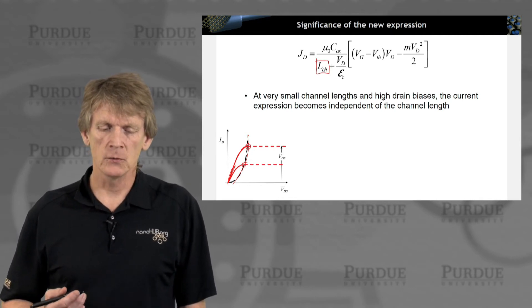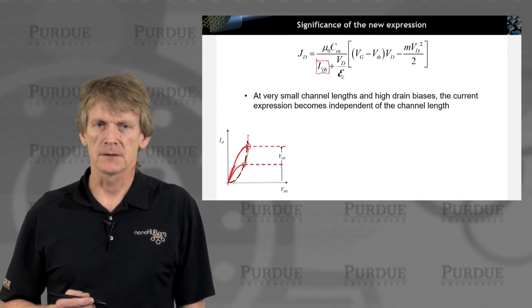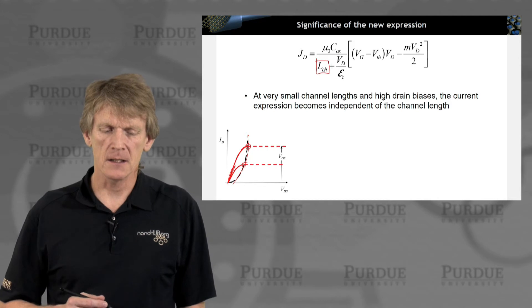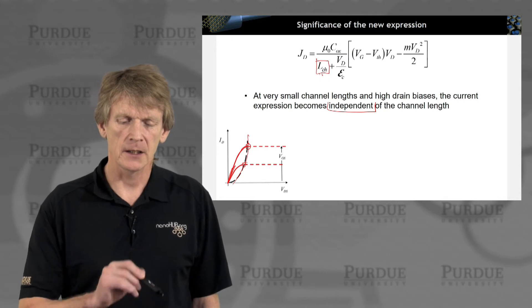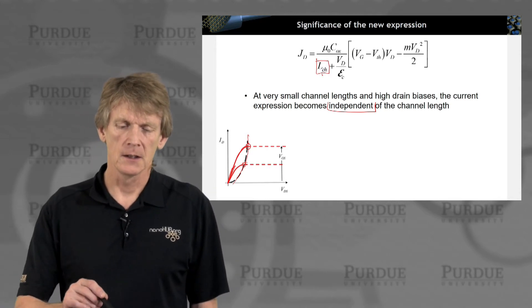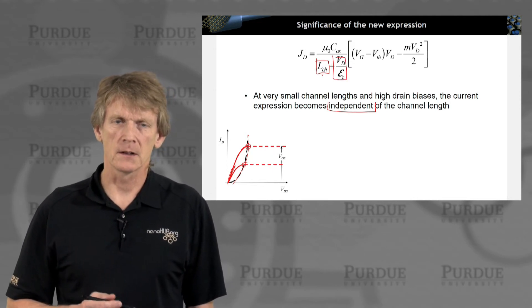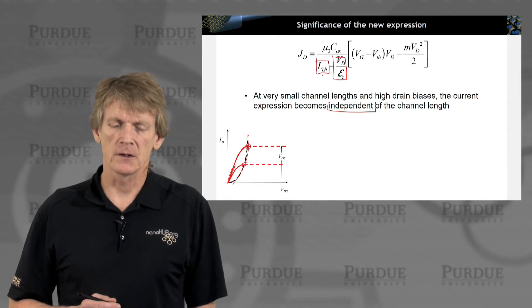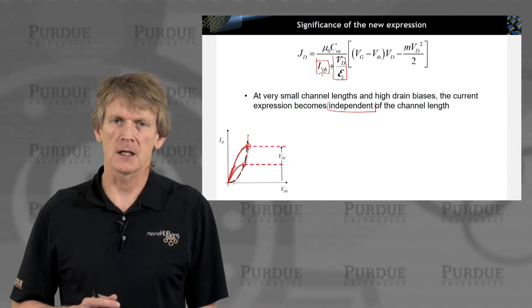Let's assume we have very small channel lengths and we have very high drain biases. So we will be having an expression here that becomes independent of the channel length. If we can neglect this term of channel length compared to a large drain voltage across, with a critical field that is equivalent to a distance, if that drain voltage is large compared to the channel length, then basically this expression becomes independent of the channel length.